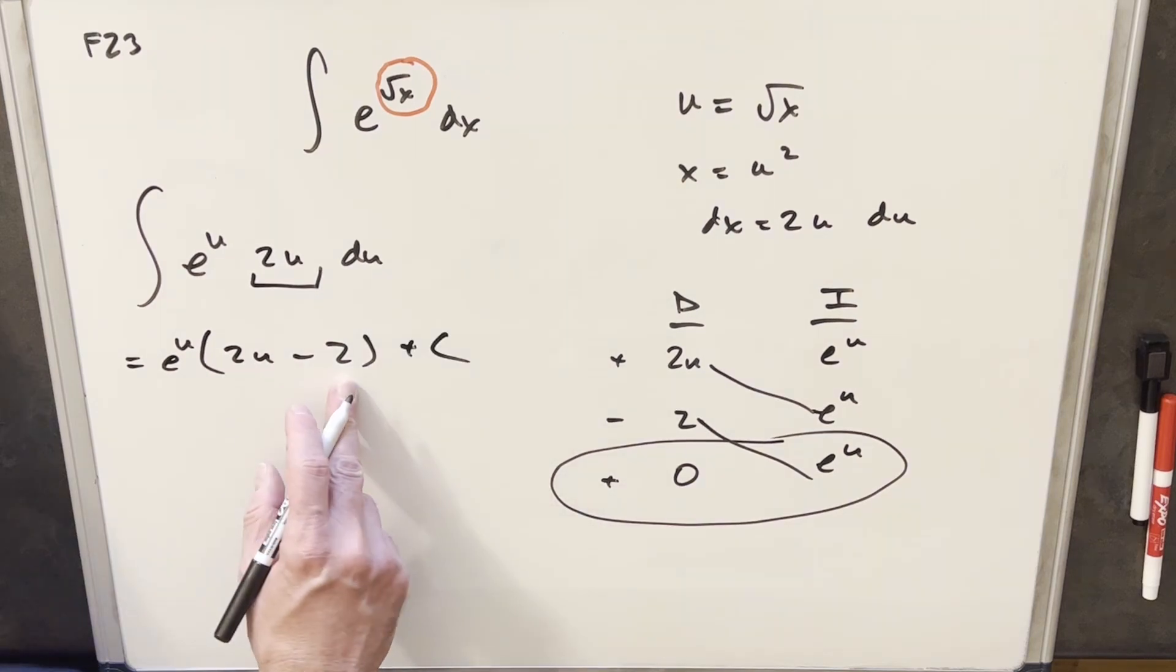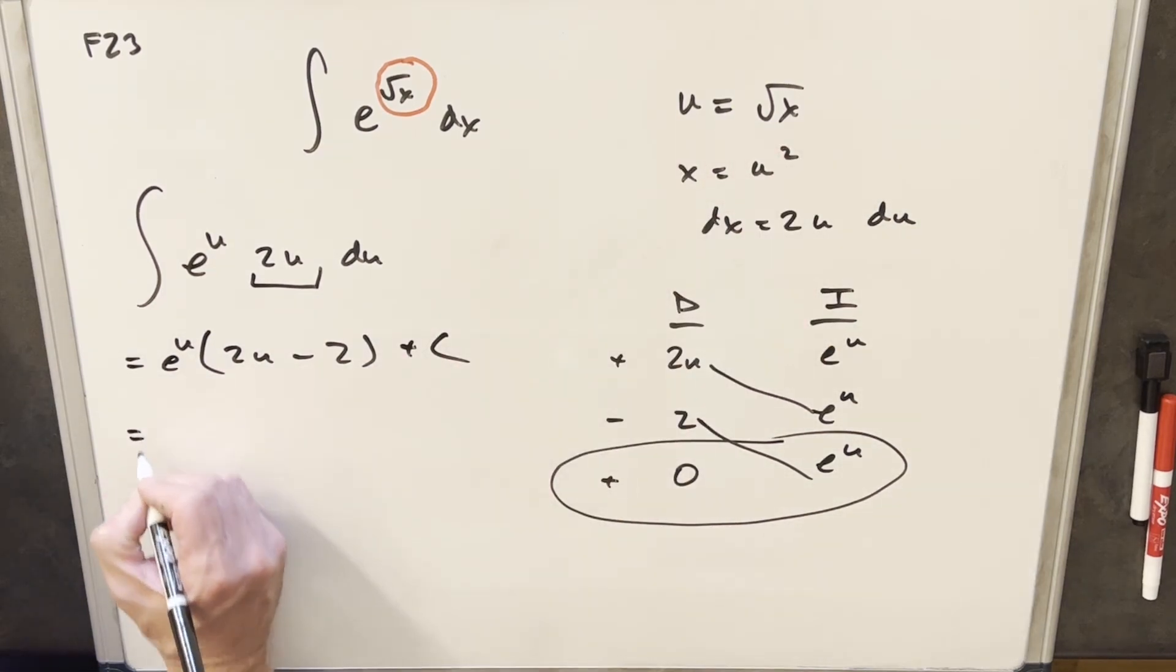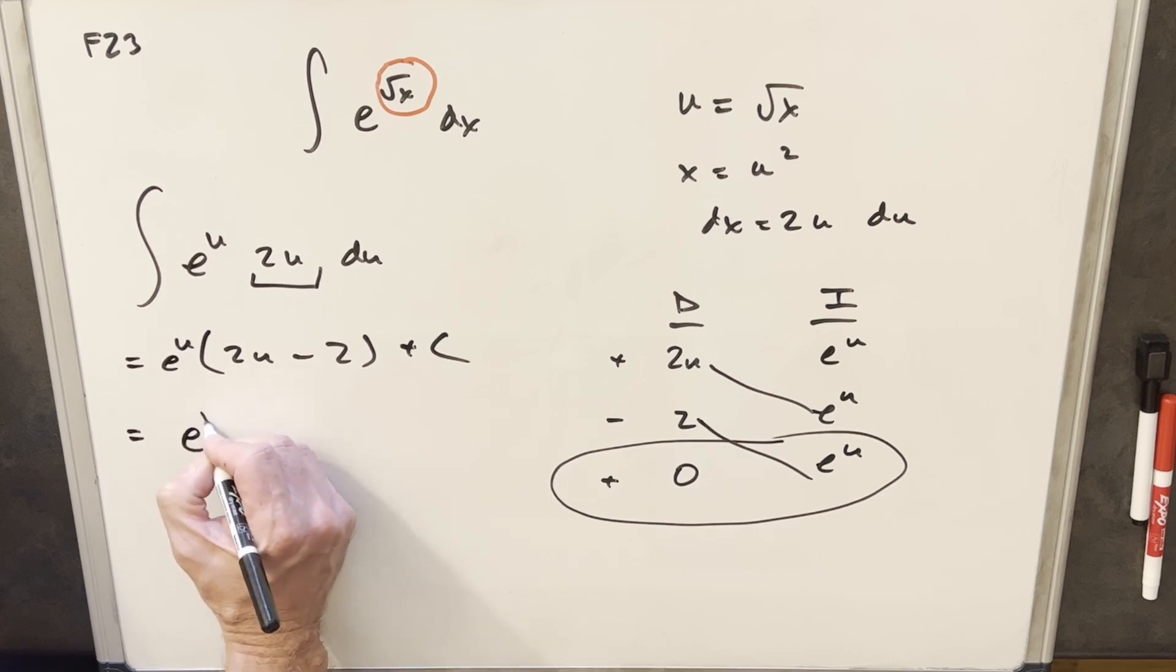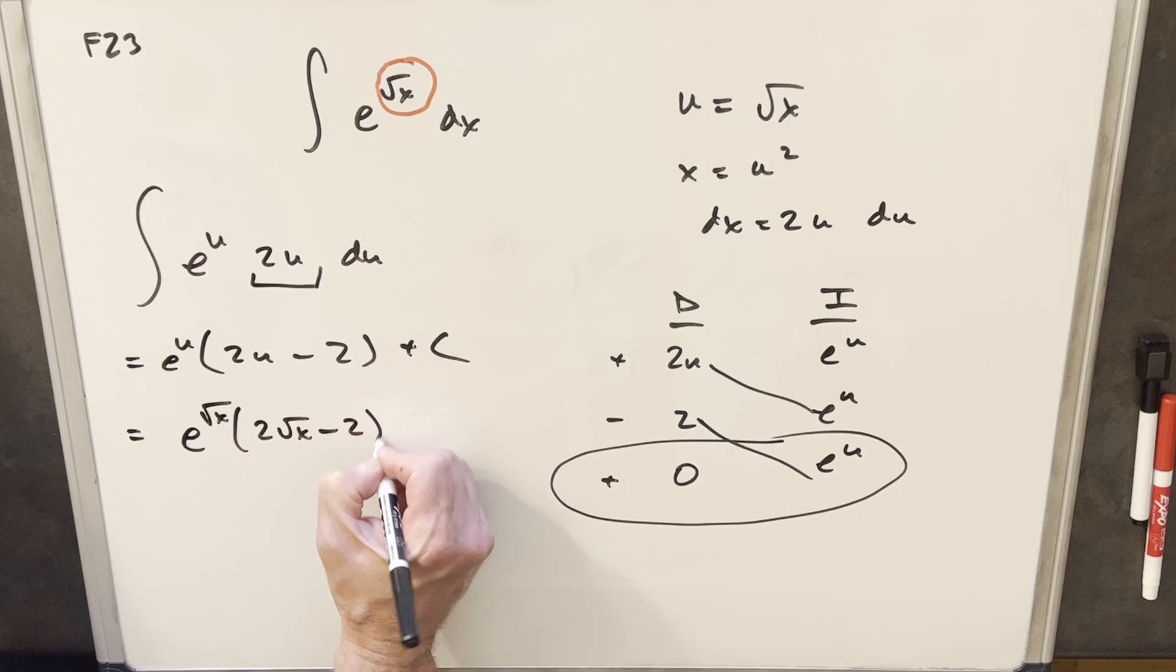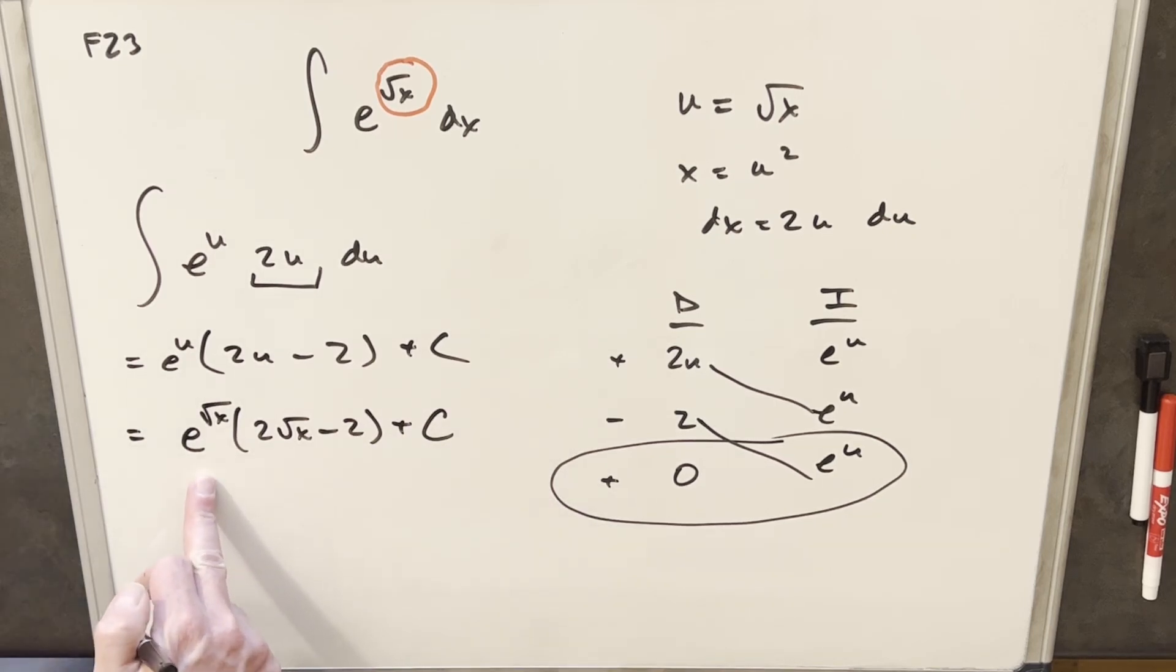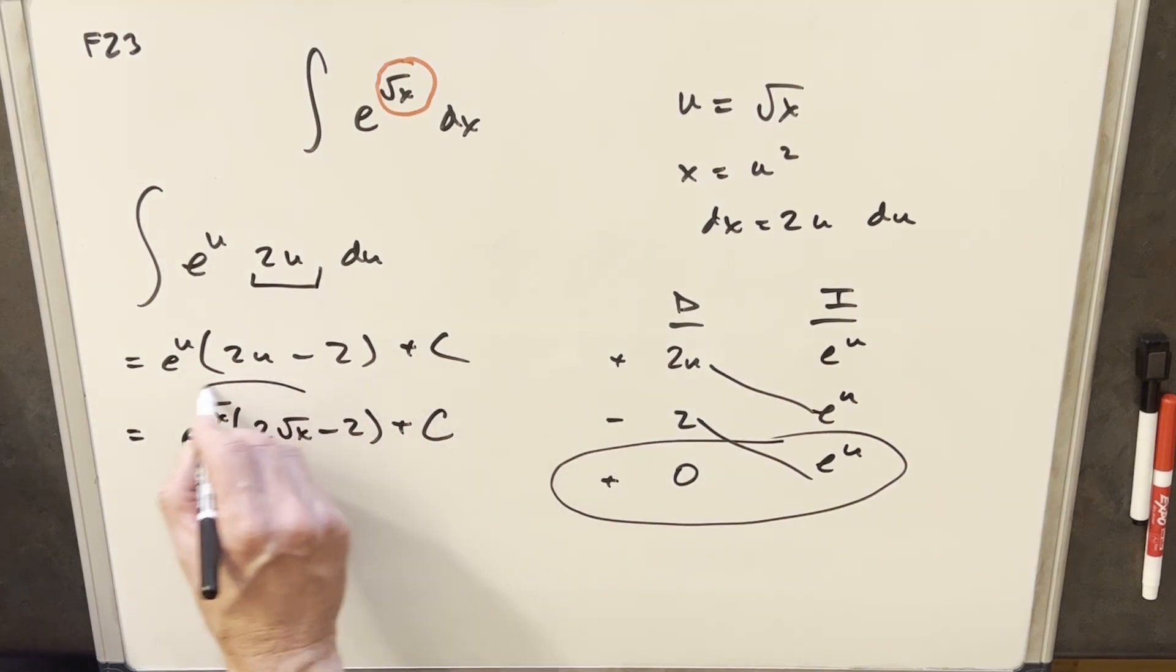And then to finish it off, I just need really to back substitute. We know our u is square root of x, so for our final solution, we're going to have e square root of x, 2 square root of x minus 2. You can factor it too up. I don't really feel like it, so I'm going to leave my solution as e square root of x, 2 square root of x, minus 2 plus c, and we're done.